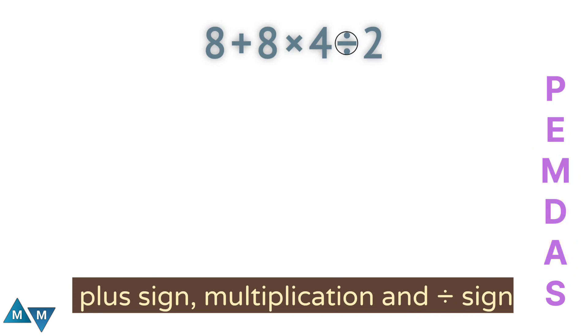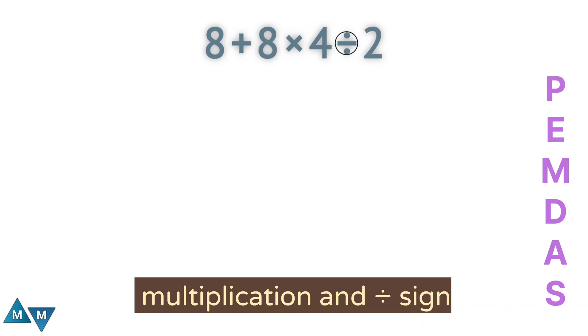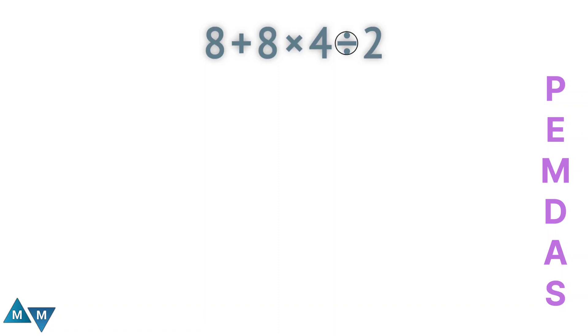Further, since there is a multiplication and division sign, both signs have the same priority. So what do I see first from moving left to right? Well, in this case I see multiplication first.